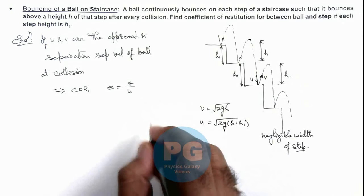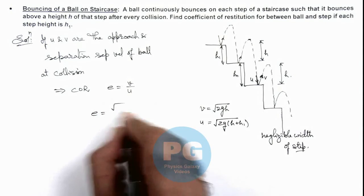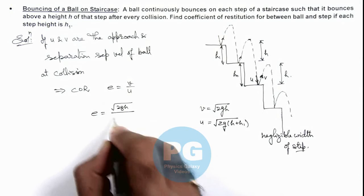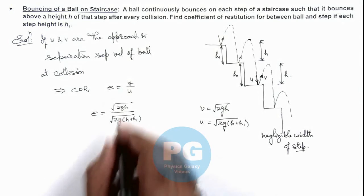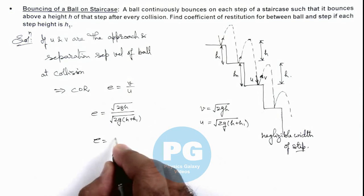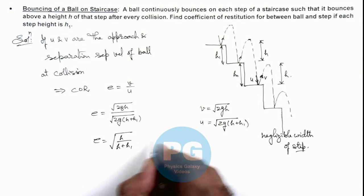If we substitute the values here, the coefficient of restitution we are getting is √(2gh) divided by √(2g(h + h₁)). So in this situation we can see the value of restitution is √(h/(h + h₁)). This is the result of our final problem.